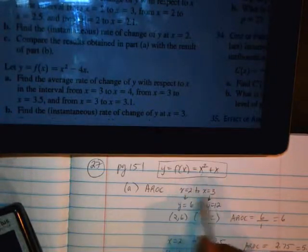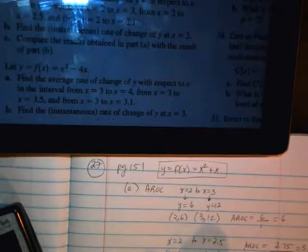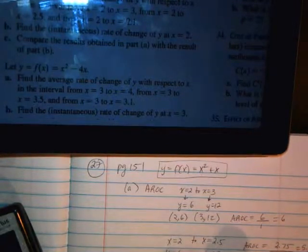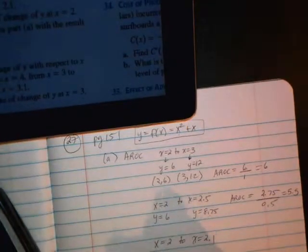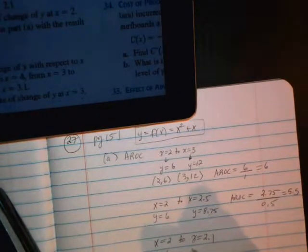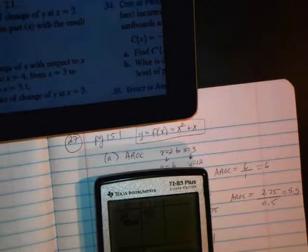Notice how the gap between the x value is shrinking. We do it one more time, from x equals 2 to x equals 2.1. This is what was given in the problem. So this is y equals 6. Over here, y would be, going back to table, 2.1, getting 6.51.